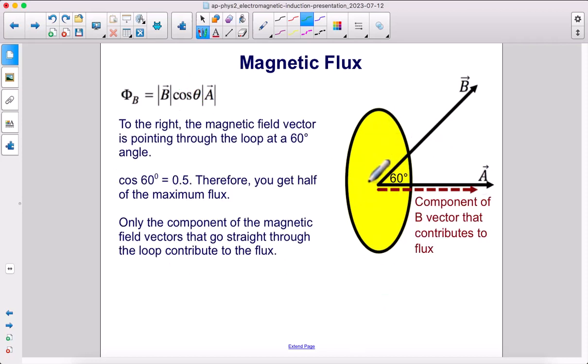To the right, we now have a magnetic field that's going through the loop at an angle this way. It's pointing at a 60 degree angle north of east. Cosine of 60 degrees is 0.5. Therefore, if your magnetic field gets pointed upwards at a diagonal of 60 degrees, you will get half of the maximum amount of flux.